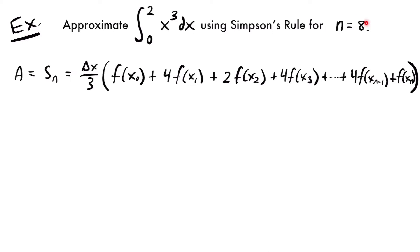Your value of n — in this case n equals 8 — determines how many terms you will have. Since n equals 8, our last term will be f of x sub 8. Notice how the coefficients of the terms alternate: we start and end with a coefficient of 1, but in between we have a pattern that alternates between 4 and 2. We multiply 4 by f of x sub 1, then 2 times f of x sub 2, then 4 again times f of x sub 3, all the way to 4 times f of x sub n minus 1.